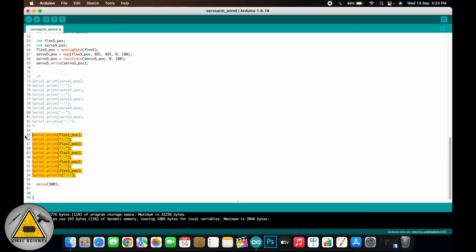At the end of the code, I have added some print statements to print the readings of the flex sensors. And if you uncomment this one, then it will print the angles of the servo motors as well and it will be displayed on the serial monitor as we have seen before. You can also change this delay. I have set it to 300. You can set it between 100 to 500.